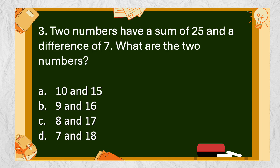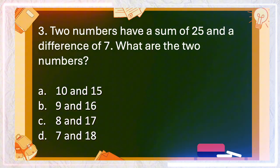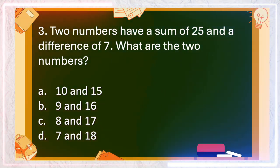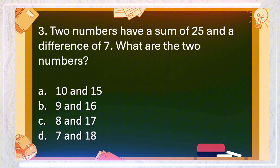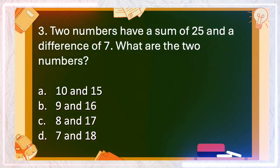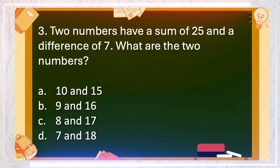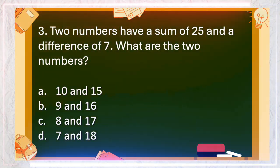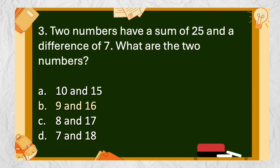Number 3: Two numbers have a sum of 25 and a difference of 7. What are the two numbers? A. 10 and 15, B. 9 and 16, C. 8 and 17, D. 7 and 18. The answer is B. 9 and 16.